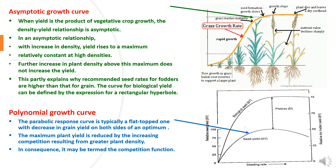The second type of growth curve is the asymptotic growth curve. When yield is the product of vegetative growth, the density-yield relationship is asymptotic. In an asymptotic relationship, with increase in density, yield rises to a maximum and then remains relatively constant at high densities. Further increase in plant density above the maximum does not increase the yield. This partially explains why recommended seed rates for fodders are higher than that for grain. The curve for biological yield can be defined by the expression for a rectangular hyperbola.